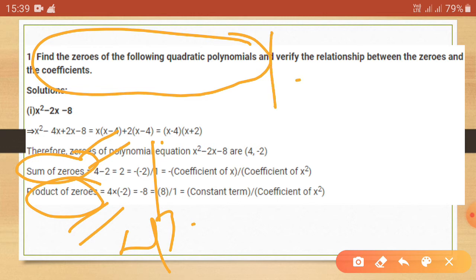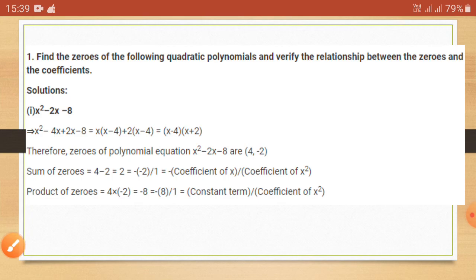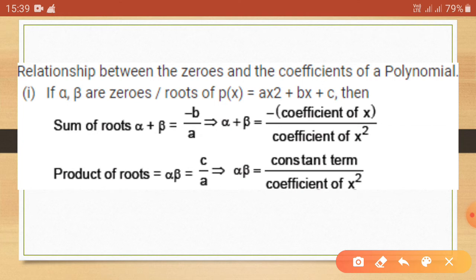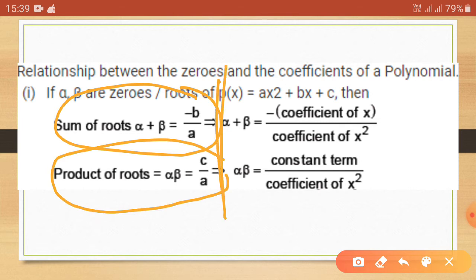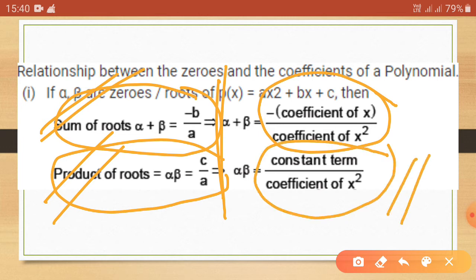If the question is to verify the relationship between zeros and coefficients, apply the formulas: sum of roots equals minus coefficient of x divided by coefficient of x square, and product of roots equals constant term divided by coefficient of x square.